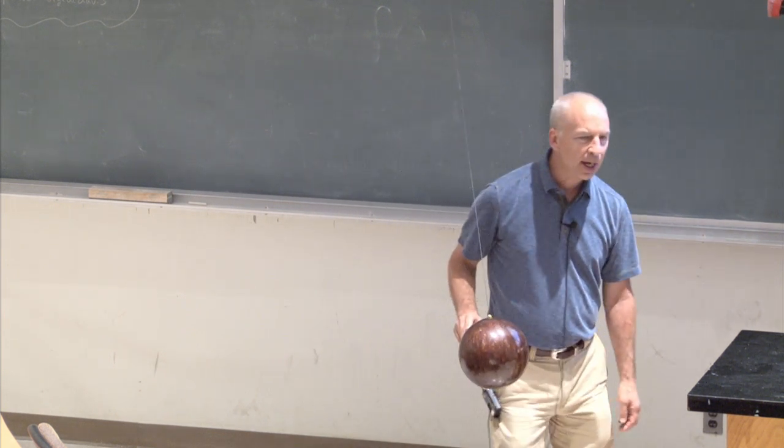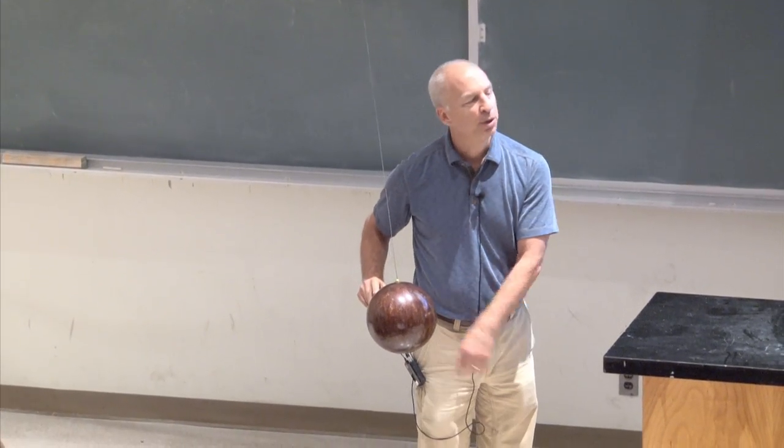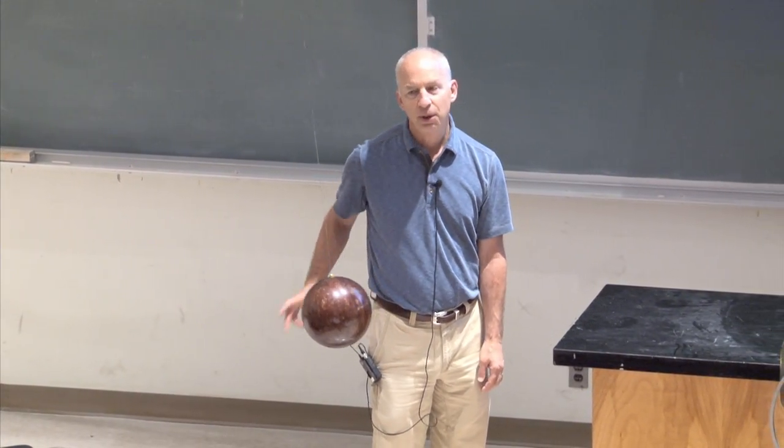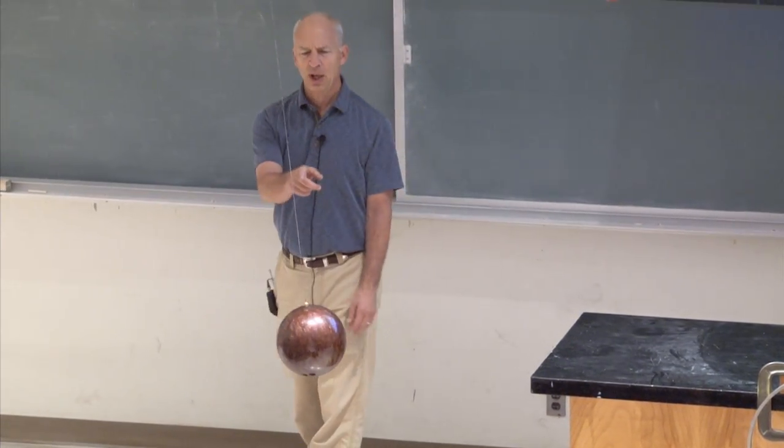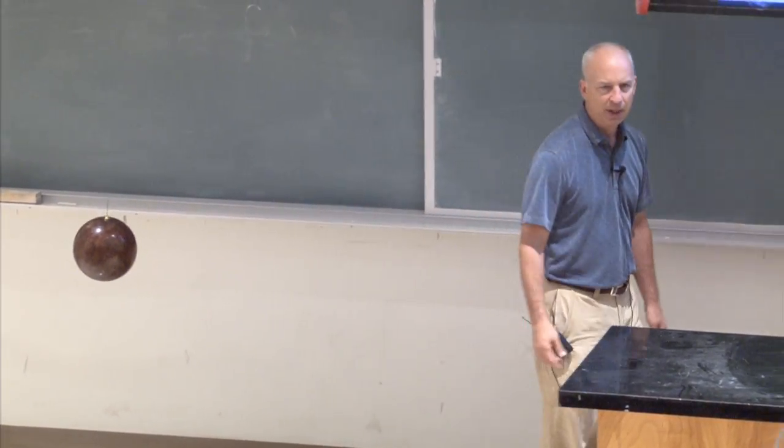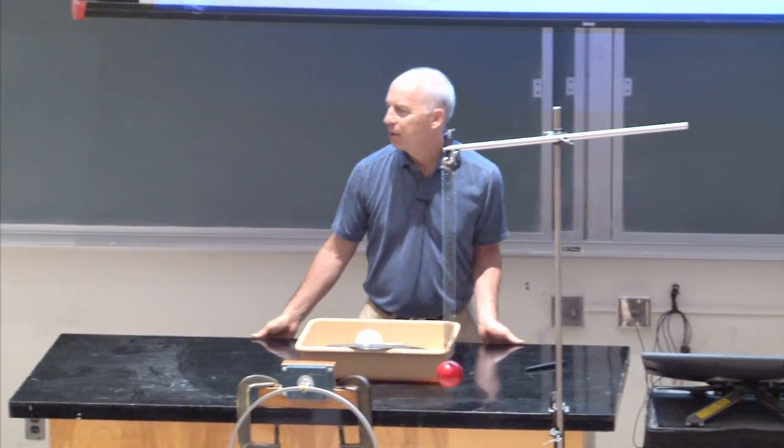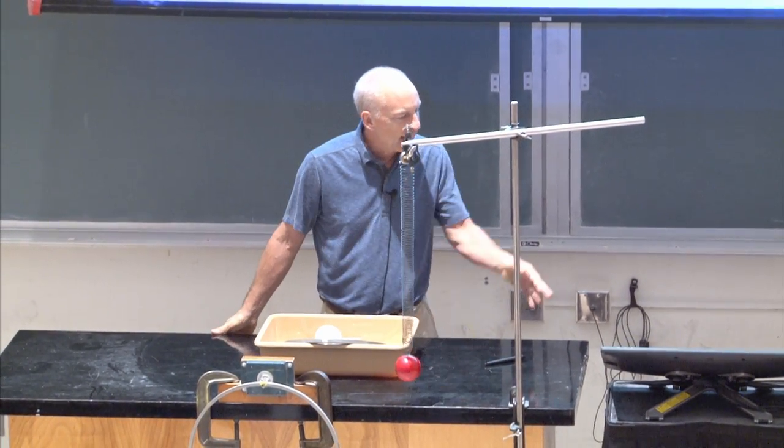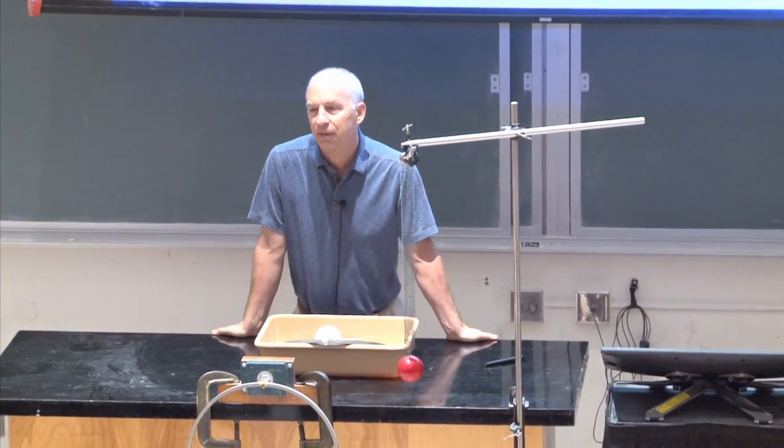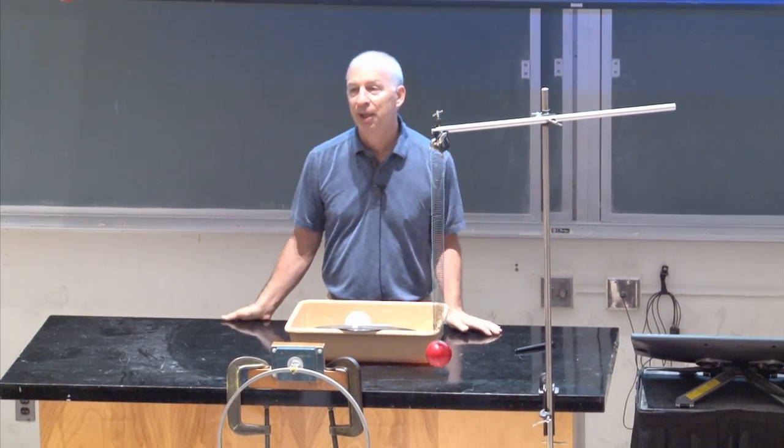If I push it the other way and let go, a force pushes it back toward equilibrium. There's a restoring force for this bowling ball. The bowling ball on a string is called a pendulum. There's a restoring force that always tries to bring it back to equilibrium. It has a potential energy curve, if we calculated it carefully, that looks a little bit like that.